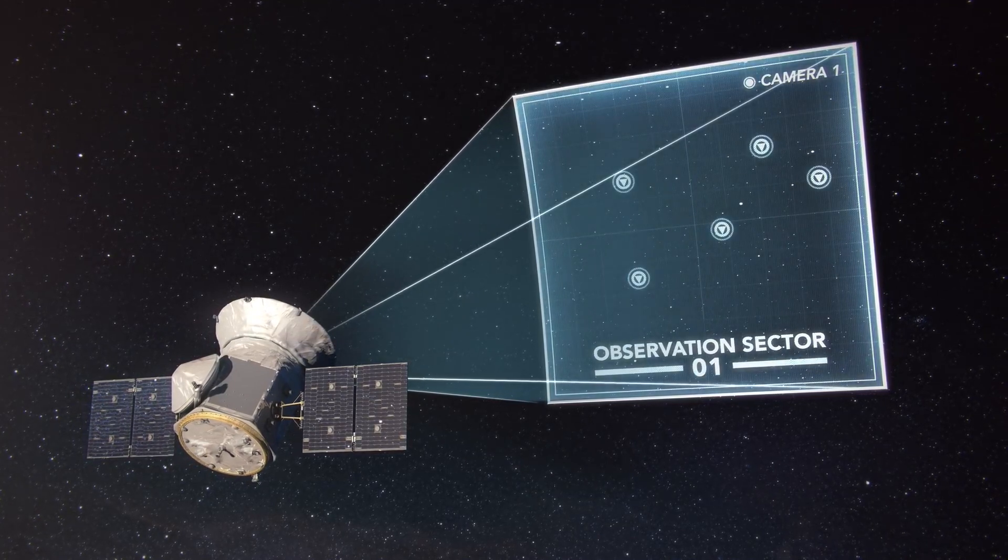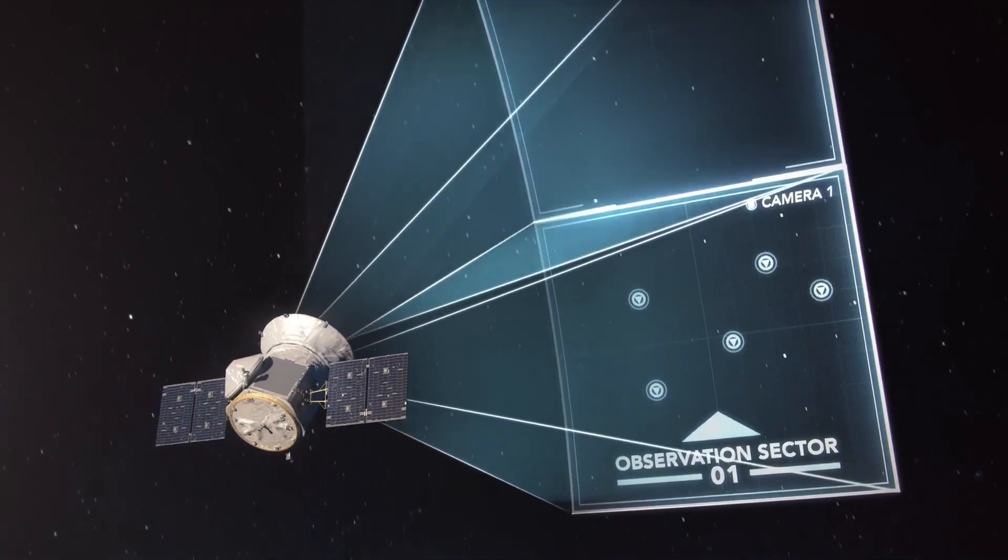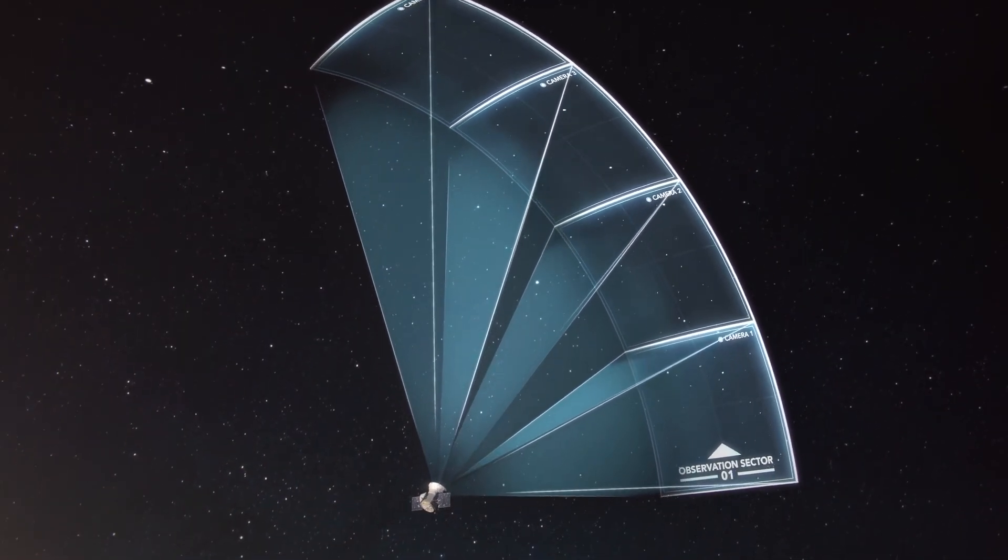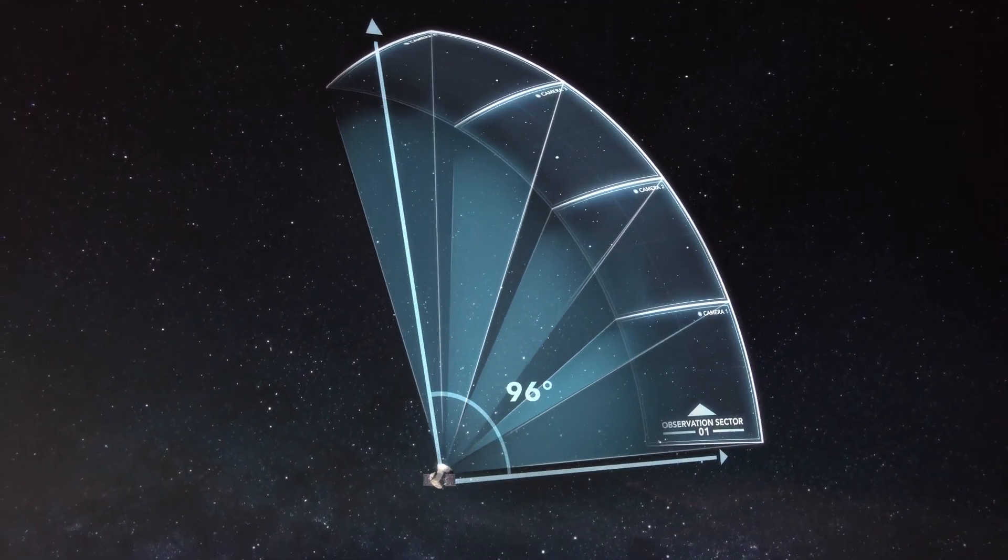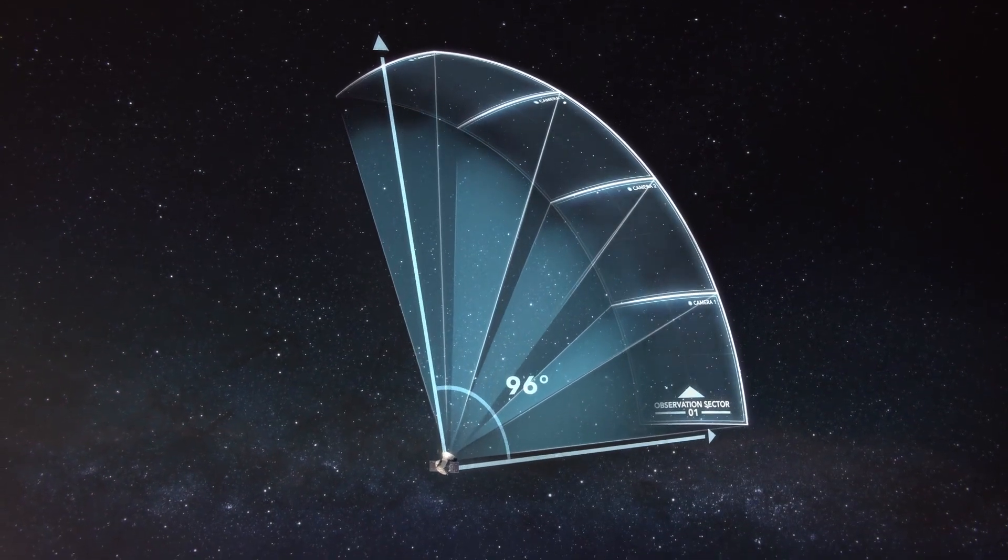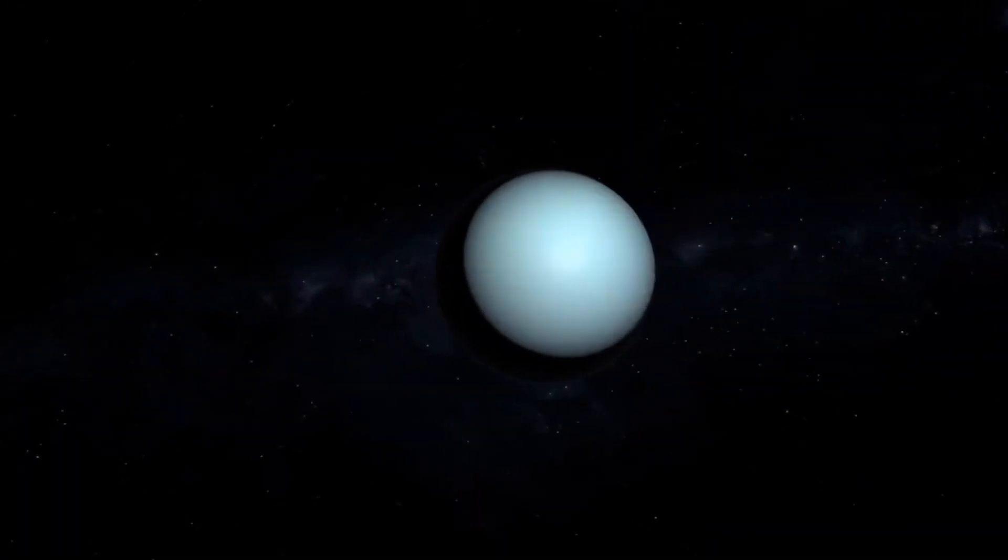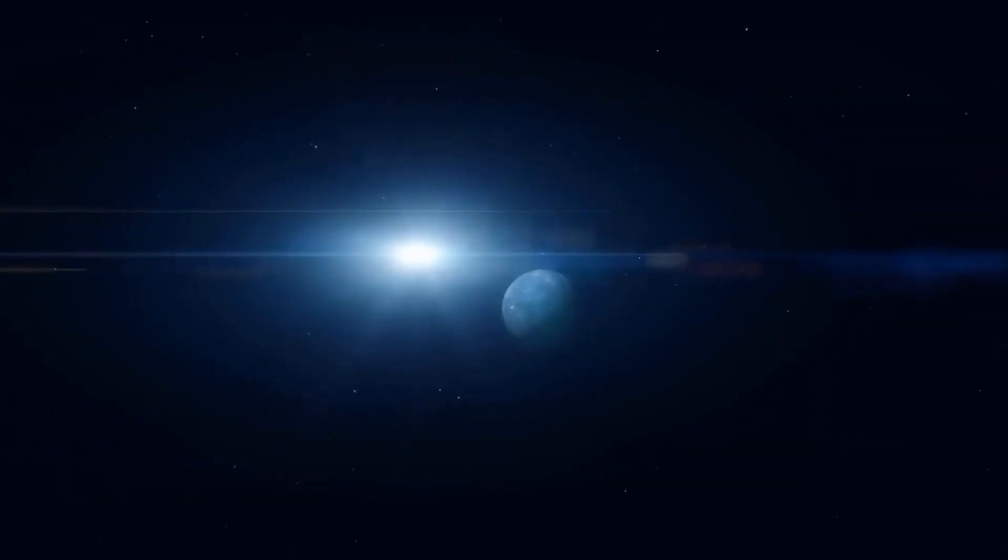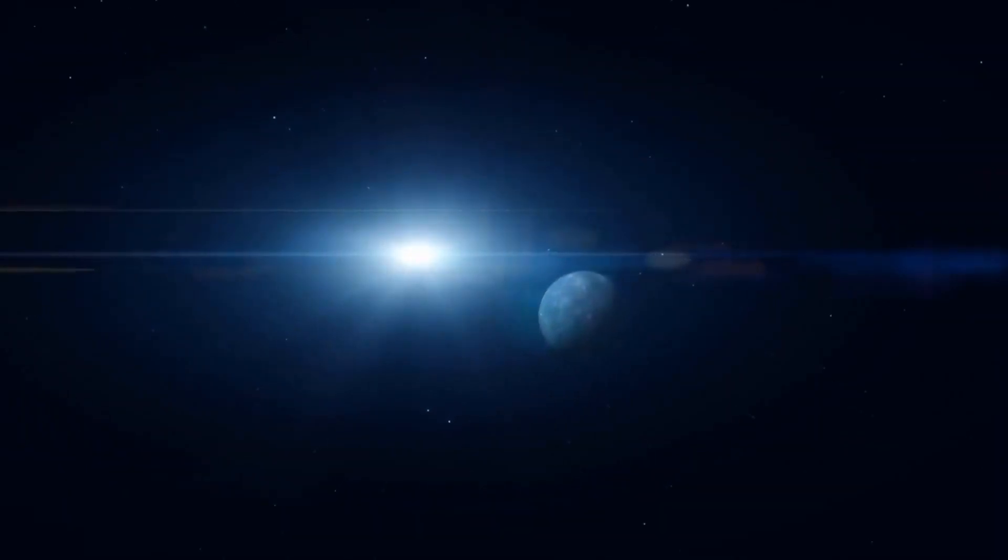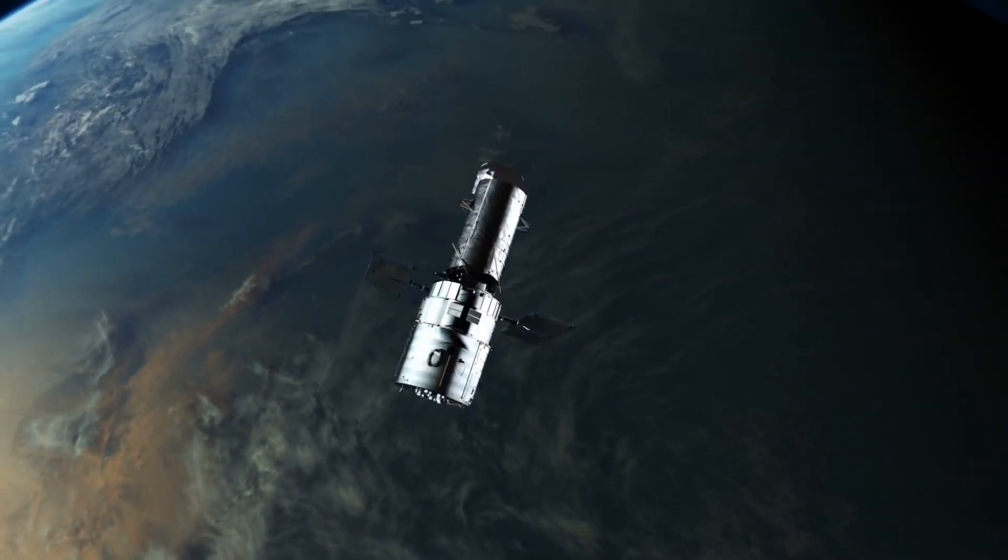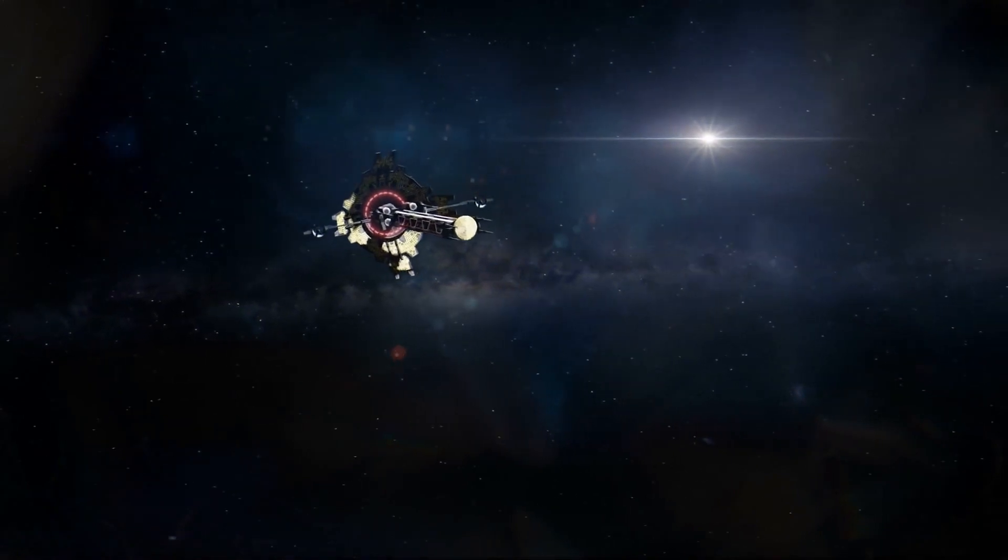But when it was still in working order, it found Kepler-22b and other planets by looking for a decrease of light that occurs when a planet passes in front of its star from Earth's perspective. Imagine searching for a minuscule black spot obstructing a tiny bit of light emitted against the backdrop of a nuclear furnace. It's difficult. Remember the transit of Venus that took place in 2012? It's kind of like that, only on a much larger scale.